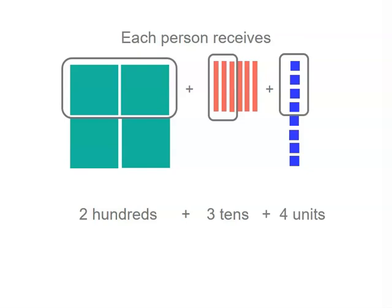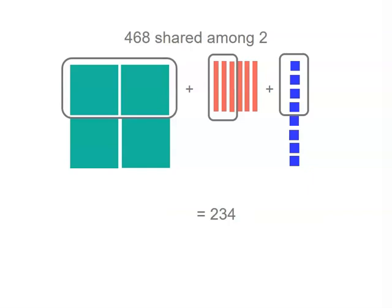So we can see that each person gets two hundreds, plus three tens, plus four units. So 468 shared between two equals 234.